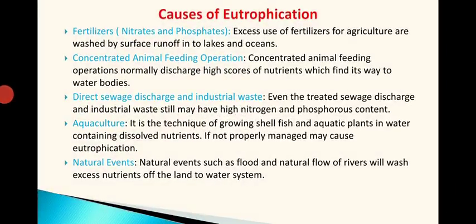Natural events are also contributing to and becoming a cause for eutrophication. Natural events such as floods and the natural flow of rivers wash excess nutrients from the land into the water. Nutrients from forests and nutritious areas travel all the way through the water, finally reaching lakes, rivers, and seas.